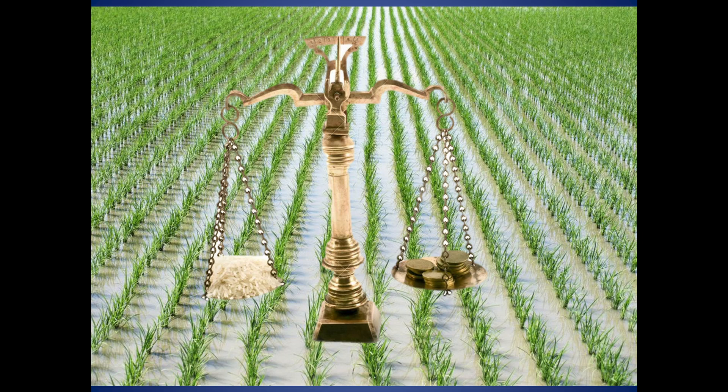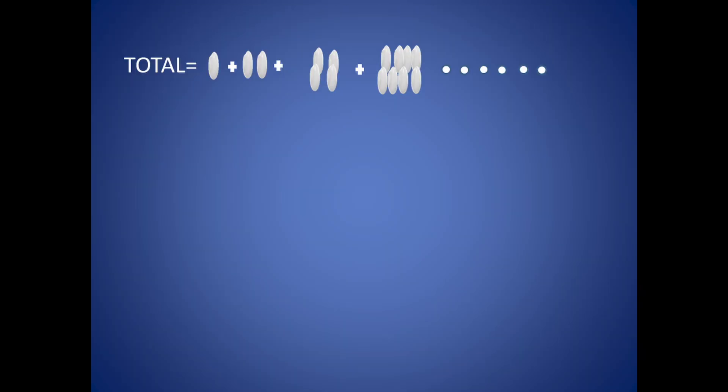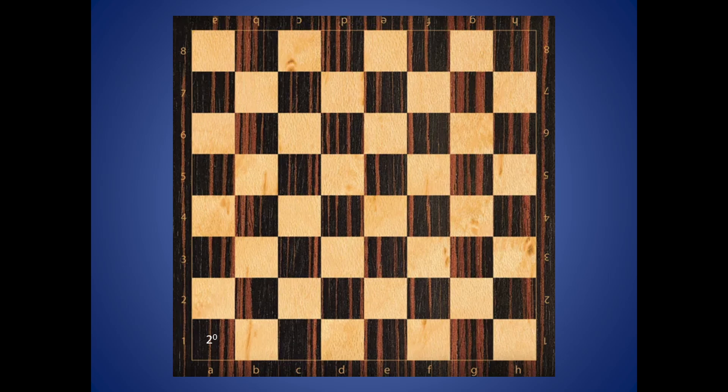But here's where it gets interesting. If we try to calculate the amount of rice following mathematics we have to add the amount of rice for each chess square, which we can calculate by multiplying the previous amount by 2, or as 2 to the power of n minus 1, where n is the square number from 1 to 64, the last one.